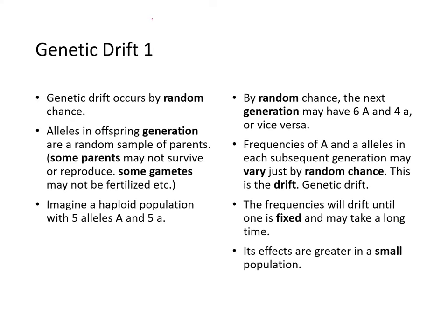Genetic drift occurs by random chance. Alleles in the offspring generation are a random sample of parents. Some parents may not survive to reproduce; some gametes may not be fertilized — so it's a random sample.